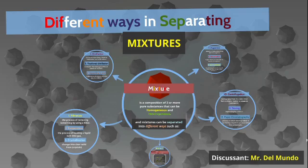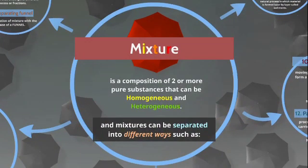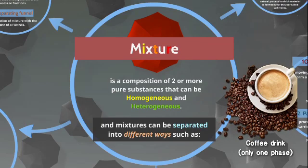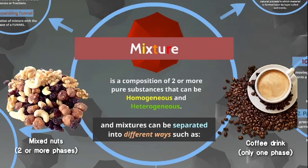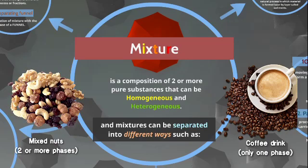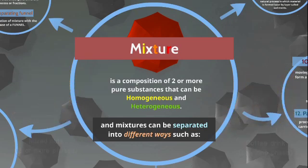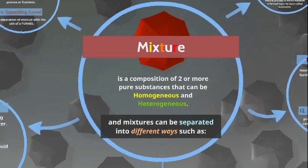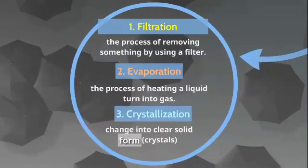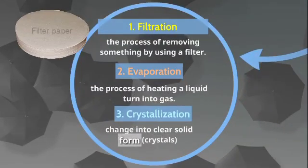We all know that a mixture is a composition of two or more pure substances that can be homogeneous and heterogeneous. Mixtures can be separated in different ways. Number one: filtration — the process of removing something by using a filter.